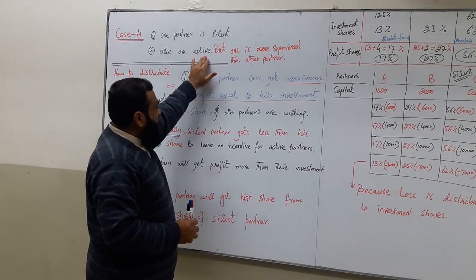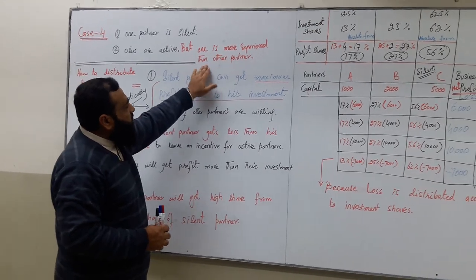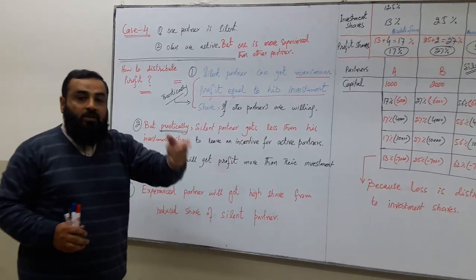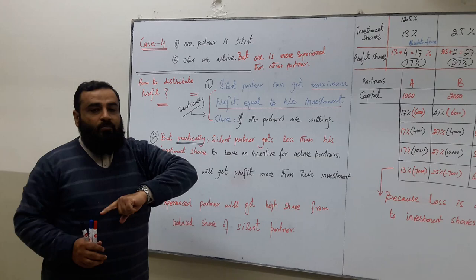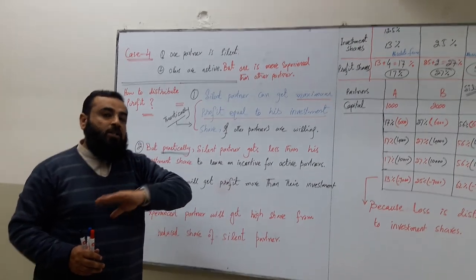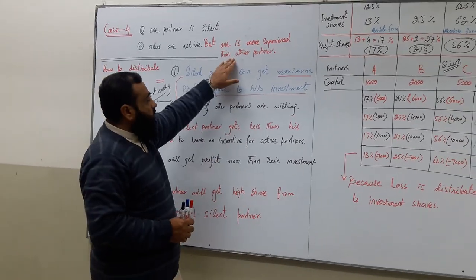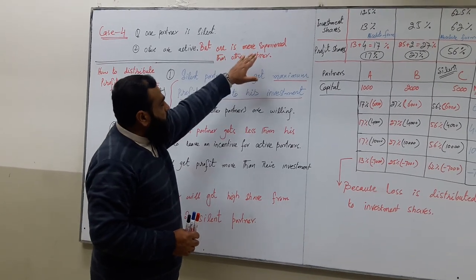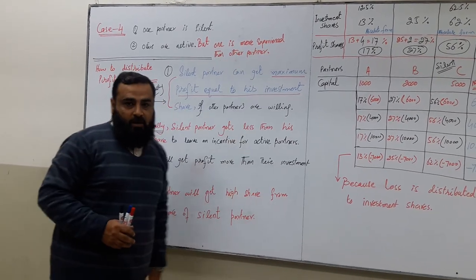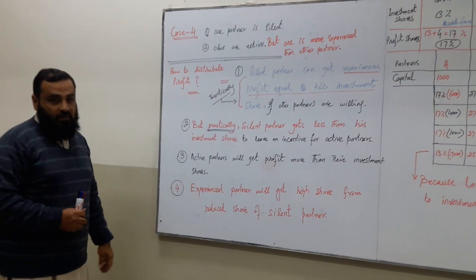But here all others are active, but one is more experienced than the other partner. The previous third case was that all other partners were active and both were equal to each other. But here the situation is different: one is more experienced than the other active partner. Then how to distribute profit and loss?